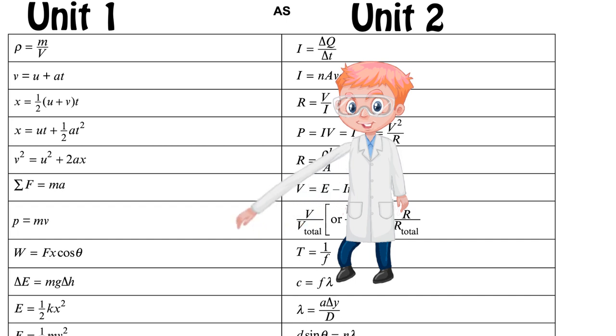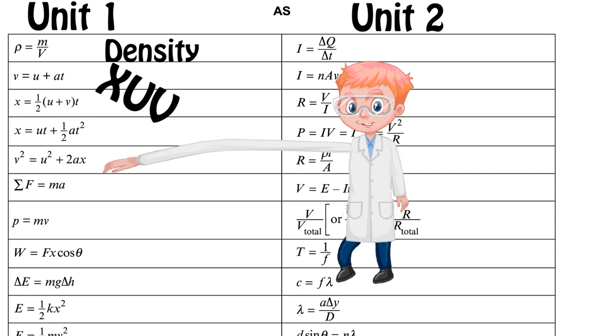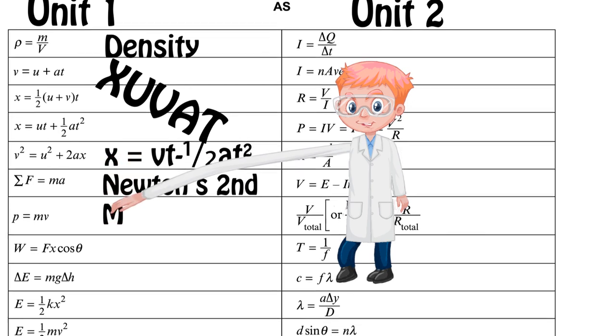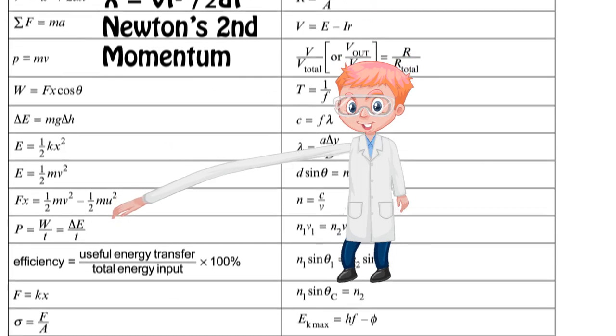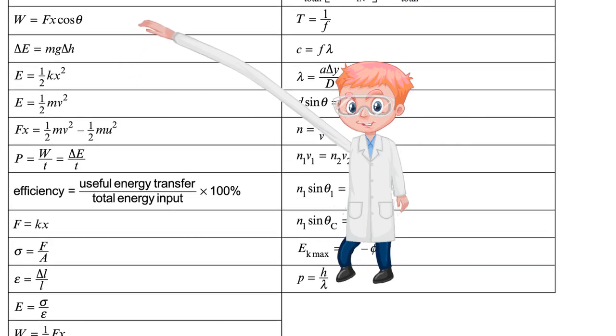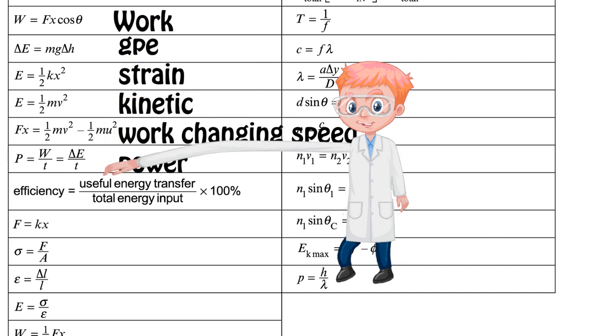The first one here is for density, that's all by itself. Our next four are XUVAT. I would also generally write in the fifth equation as well. We've got Newton's second law and momentum. The next set is all to do with energy: our definition for work followed by different types of energy—strain, kinetic, work done changing speed, power and efficiency.